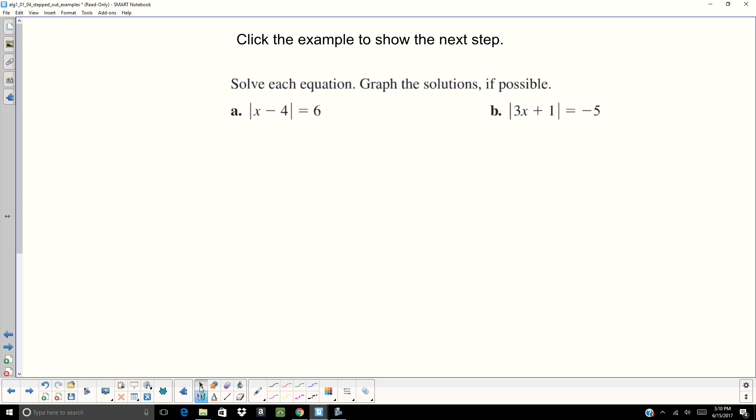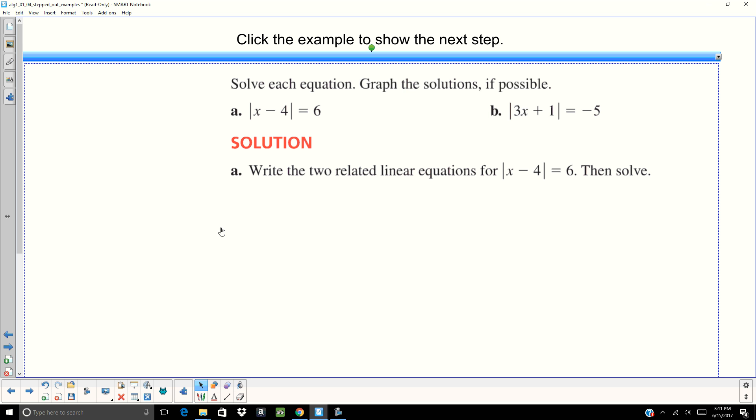So let's go ahead and work out our first example. X minus 4 equals 6. First thing we're going to do is set up our two equations. X minus 4 equals 6 and X minus 4 equals negative 6. We solve each one of them by adding 4 to both sides and you get two answers. X equals 10. X equals negative 2.